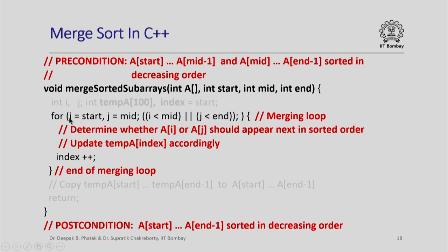Here is the central merging loop. I initialize 'i' to 'start' and 'j' to 'mid', and iterate as long as there are elements to examine in either sub-array — i.e., while i < mid or j < n. The values of i and j are incremented within the loop body. At each iteration, I determine whether a[i] or a[j] should appear next in sorted order, copy the appropriate element to temp_a[index], increment i or j accordingly, and then increment index.